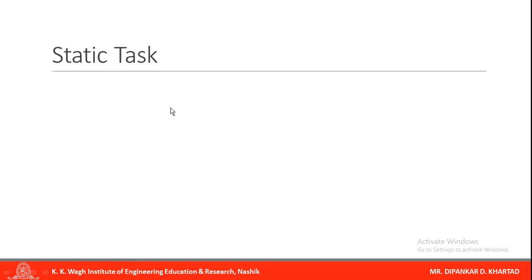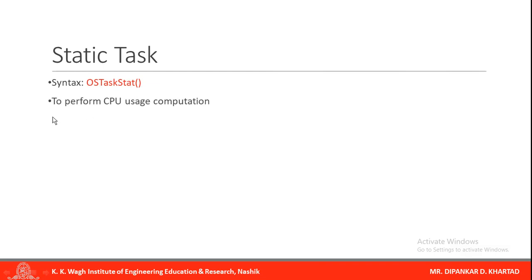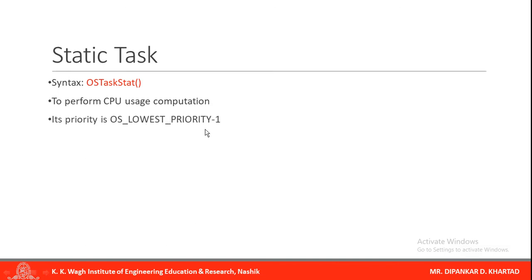Next is the static task. The syntax is OS task stat. This task is used to perform CPU usage computation. Its priority is the lowest priority and this task is optional.